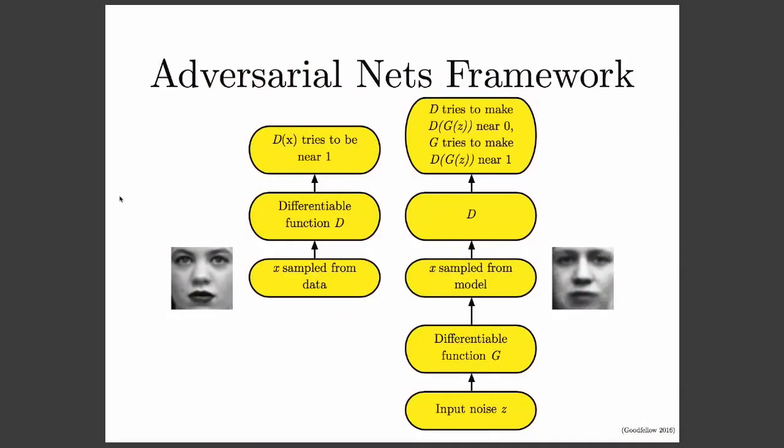We apply the discriminator function to the fake example pulled from the generator. The discriminator tries to make its output D(G(Z)) be near zero. Earlier when we used the discriminator on real data, we wanted D(X) to be near one. Now the discriminator wants D(G(Z)) to be near zero, to signify that the input is fake. Simultaneously, the generator is competing against the discriminator, trying to make D(G(Z)) approach one.